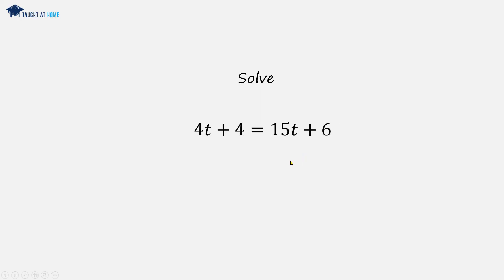Now let's get all the t's to the left hand side. We can subtract 15t from the right hand side and the left hand side. 4t minus 15t is minus 11t, and these 15t's cancel out. We're left with minus 11t plus 4 equals 6.